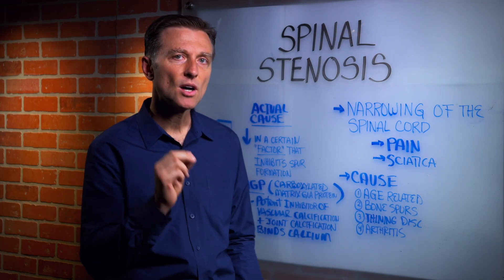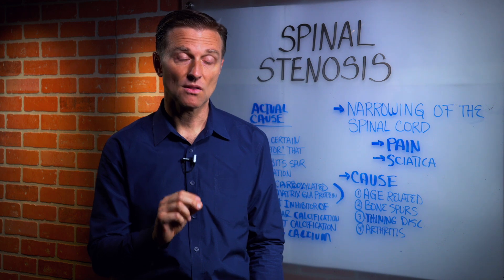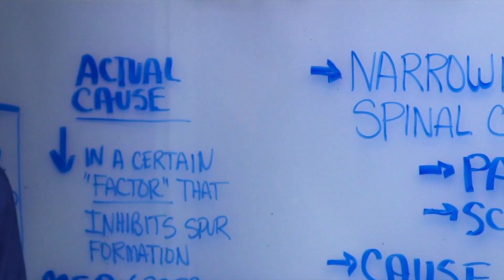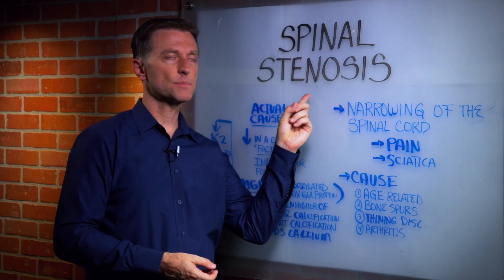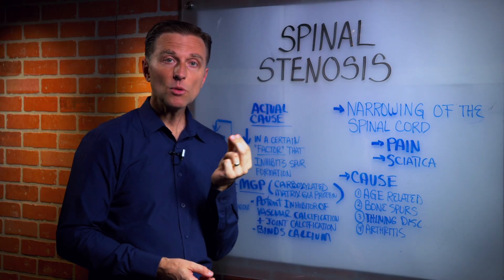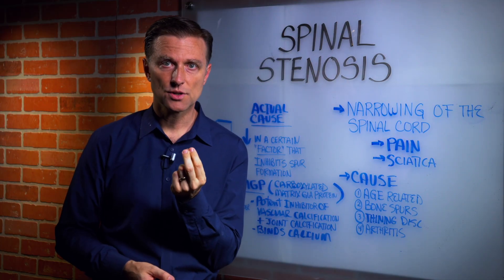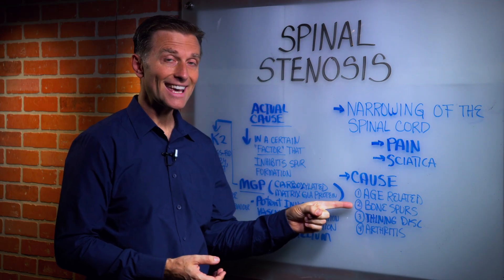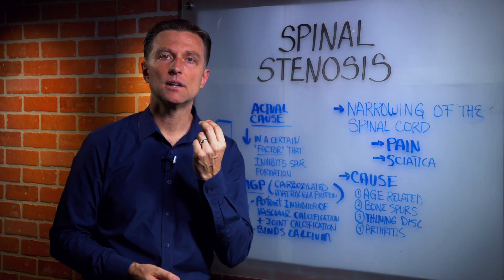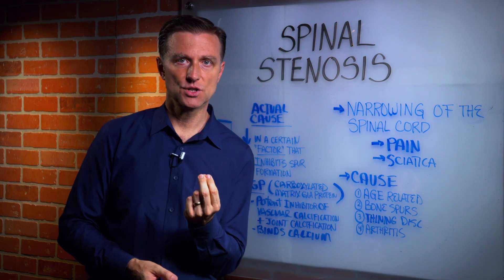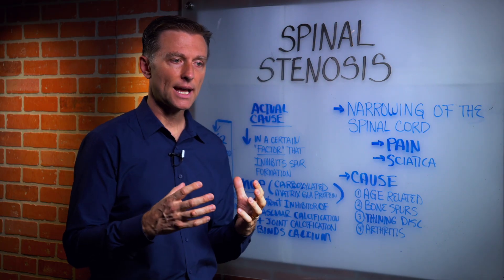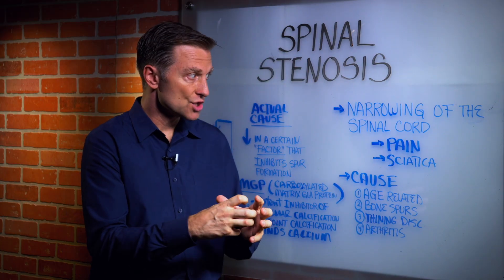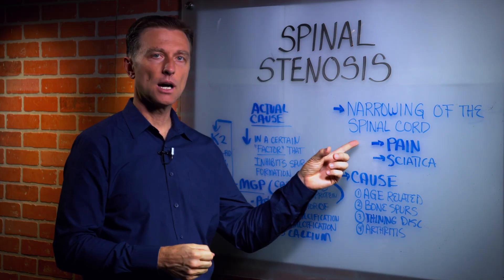But what is the real underlying cause of this? Because a lot of people have this and they don't really know what to do about it other than surgery. So what is the actual cause of spinal stenosis? Normally, there is a certain factor or chemical that is supposed to inhibit bone spurs and the formation of calcium deposits in the soft tissues. There should not be an excess of calcium deposits in the ligaments around the spinal column, and when that occurs, it can constrict and narrow the spinal column.